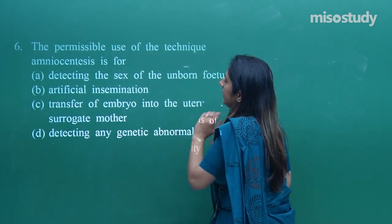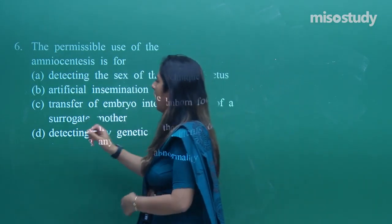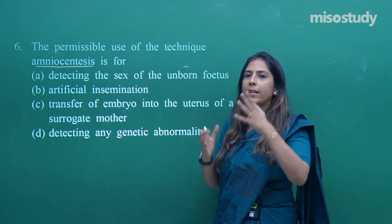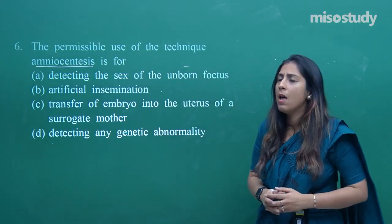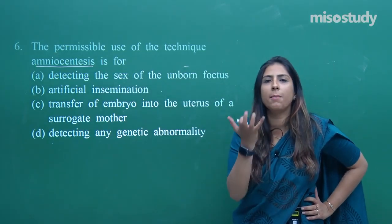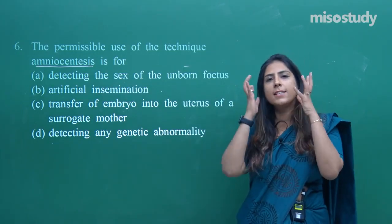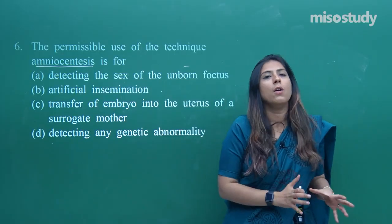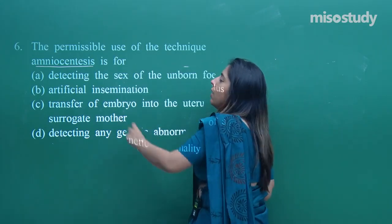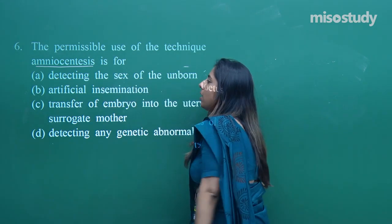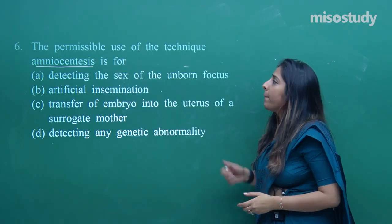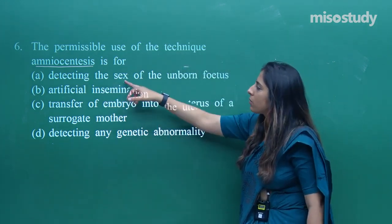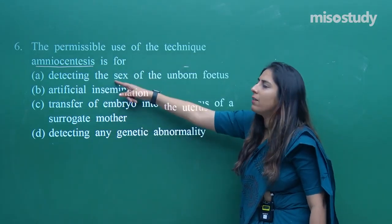Question number six: the permissible use of the technique amniocentesis is for — what? Amniocentesis is the procedure where 20 to 30 ml of amniotic fluid is taken out. That fluid contains fetal cells which are cultured, stained, and used for karyotyping to detect genetic disorders or the sex of the fetus. Option A says detecting sex of an unborn fetus — this could be a reason, but the question asks for the permissible use.